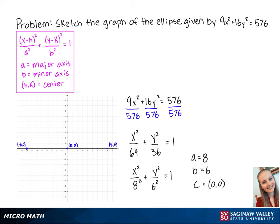The minor axis points will be 6 above and 6 below the center. So the first point is at 0, 6, and the second point is at 0, negative 6. Now we will connect the points to get an ellipse that looks like this.